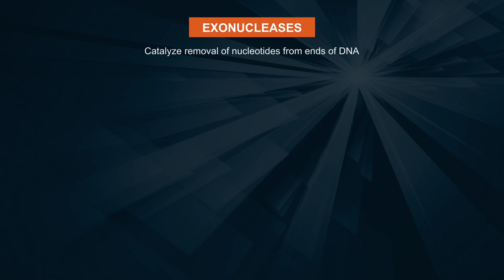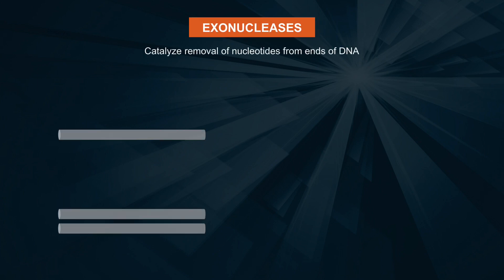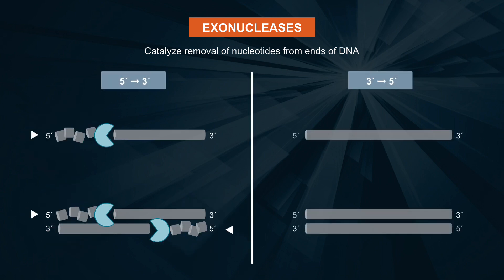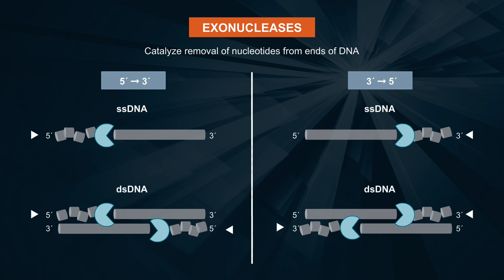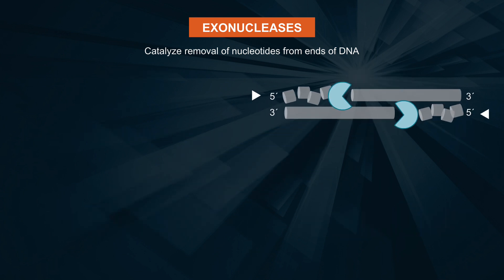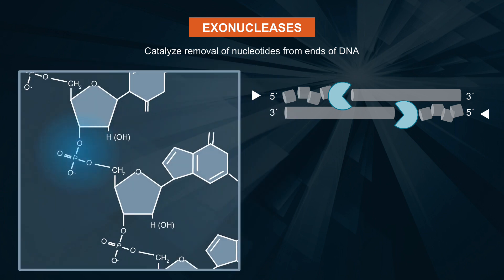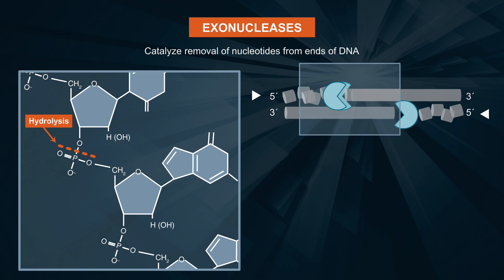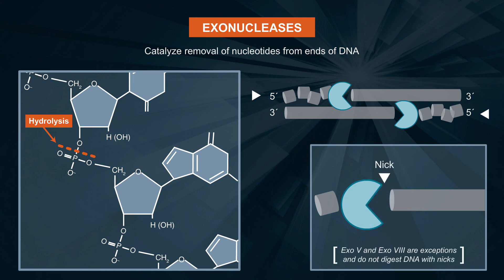Exonucleases are enzymes that catalyze the removal of nucleotides in either the five prime to three prime or the three prime to five prime direction from the ends of single-stranded and/or double-stranded DNA. Removal of nucleotides is achieved by cleavage of phosphodiester bonds via hydrolysis. These important enzymes can have slightly different activities and therefore can be used for a wide variety of applications. Most exonucleases digest at nicks in the DNA.